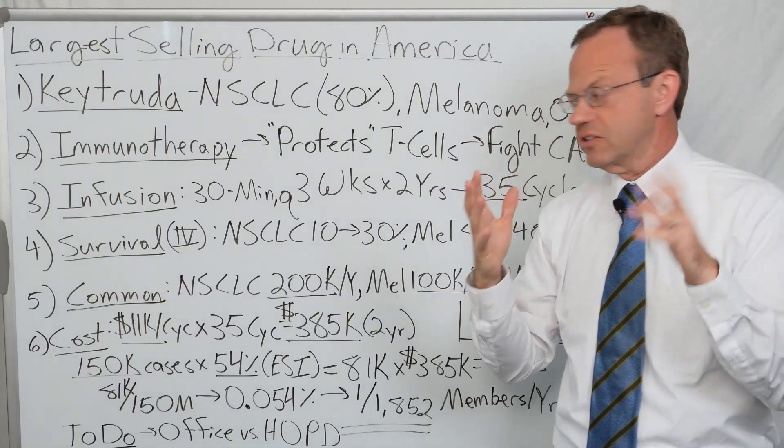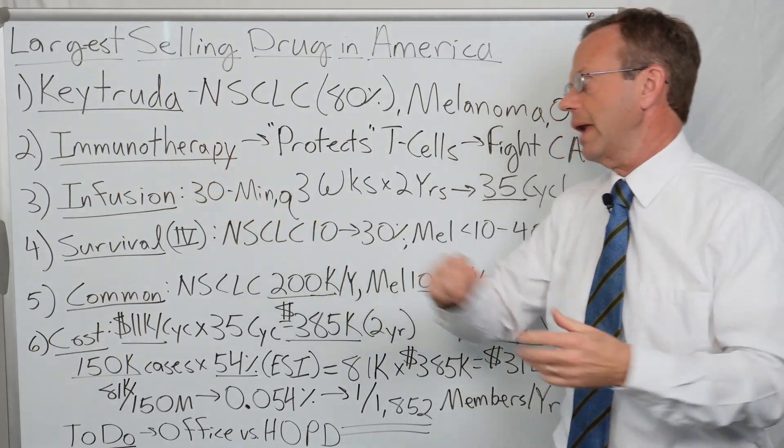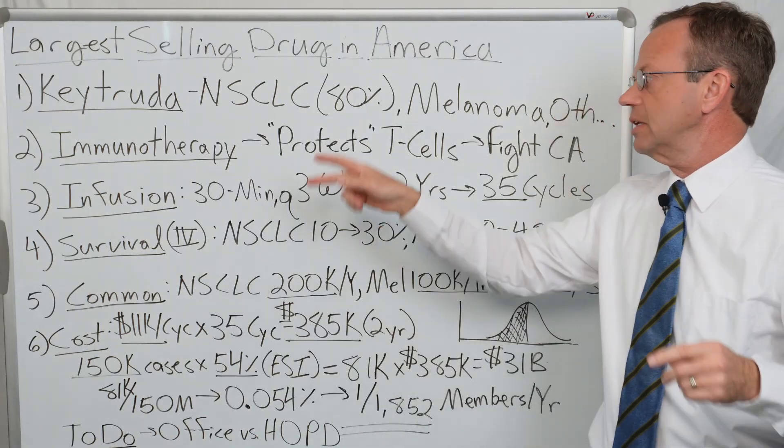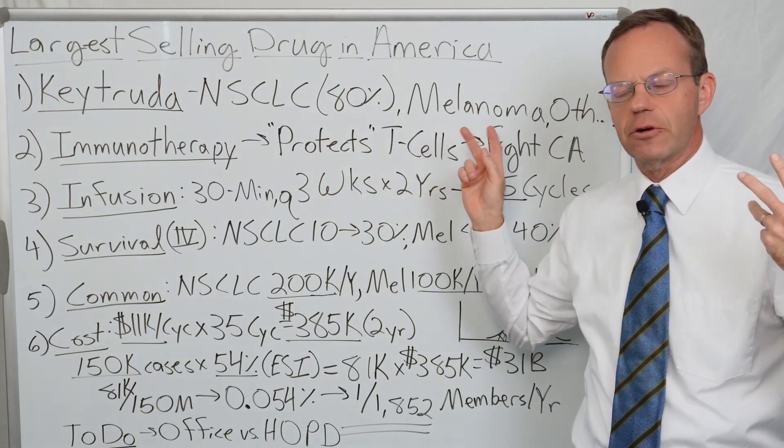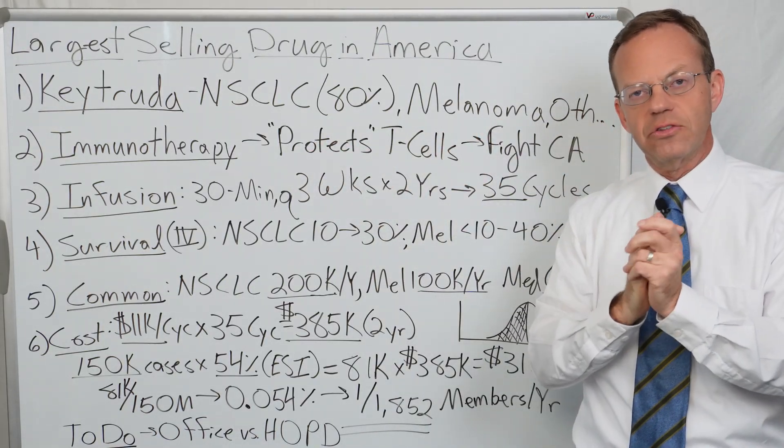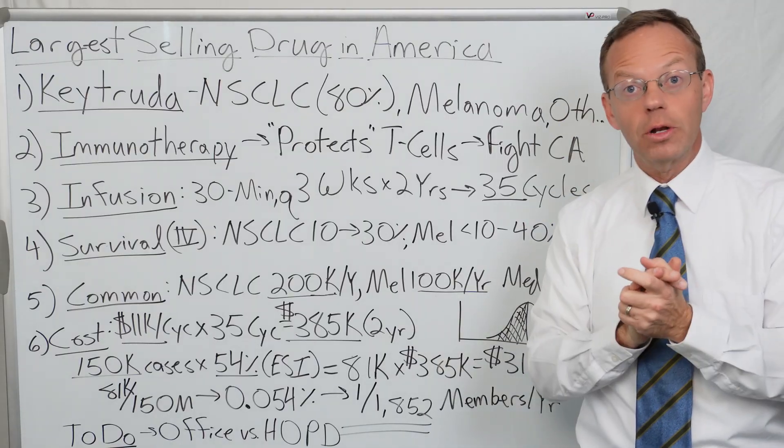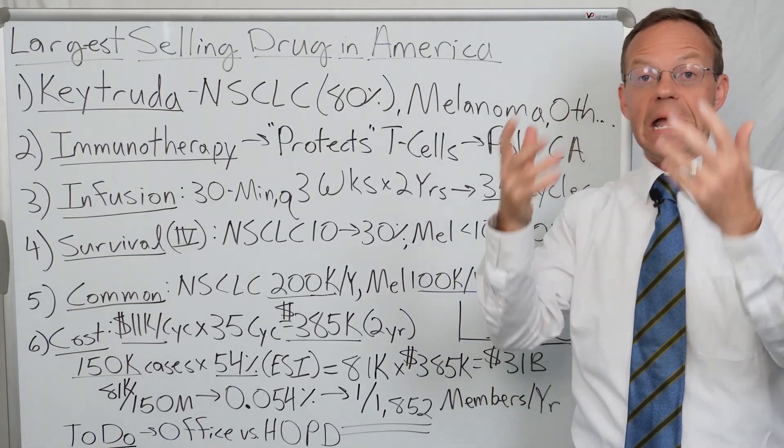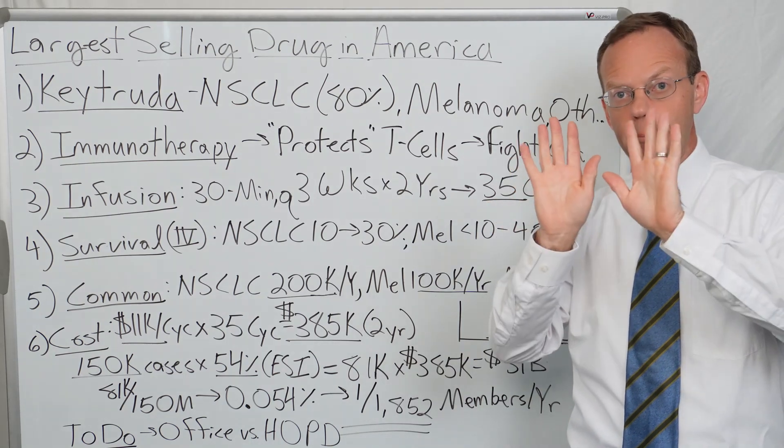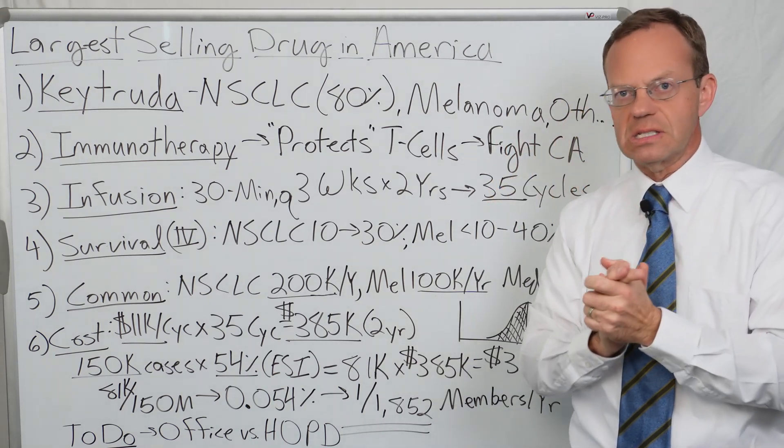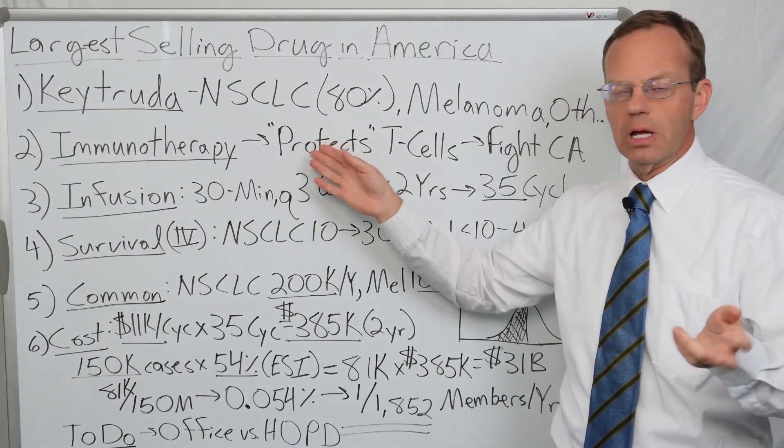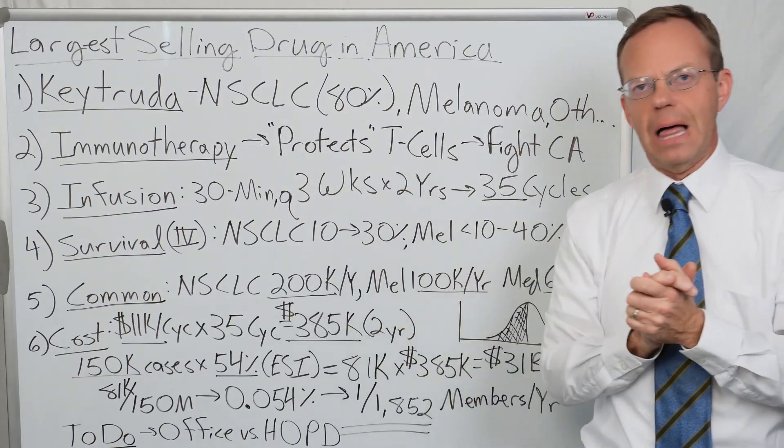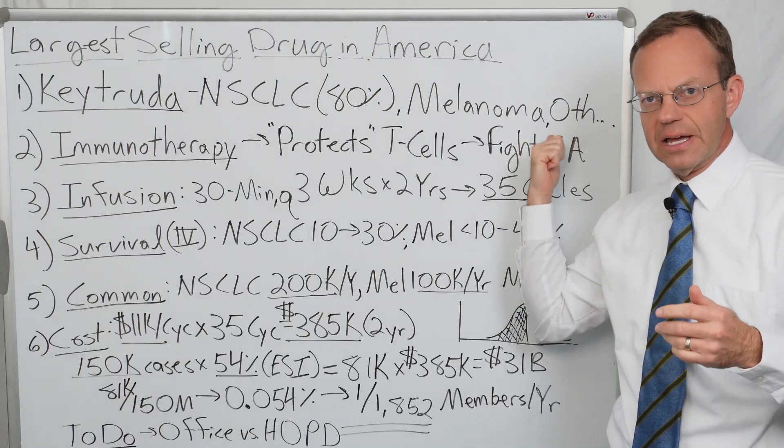How specifically does Keytruda work? It's one of these immunotherapies, a monoclonal antibody. Our cancerous cells are actually attacked by our own immune system, and the cancerous cells have created a way to block or shield themselves from our own immune system. Keytruda protects those T cells so they're able to get through that blockage and still fight the cancer.